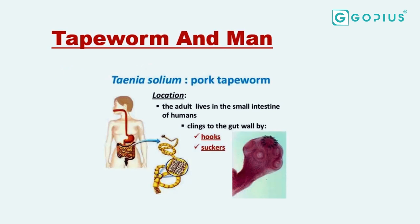The tapeworm has attachments — it has the sucker and hooks which are used to attach itself to the small intestine of man. Whenever man takes in food, the nutrients are sucked up by the tapeworm. So instead of man gaining nutrients, it's losing nutrients. No matter how much somebody feeds, you can finish a whole pot of food but still look lean because of the tapeworm taking all the nutrients.